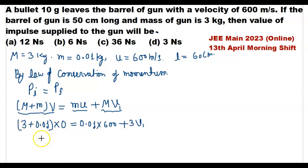(3 + 0.01) times 0 equals 0.01 times 600, which equals 6 plus 3V1.